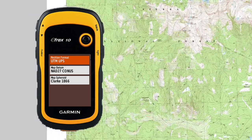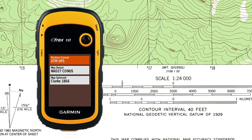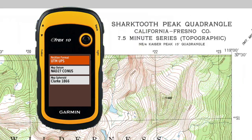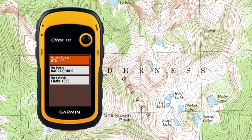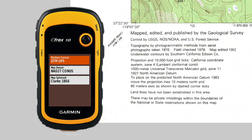The map I'm working with is the United States Geologic Survey 1:24,000 scale topographic map titled Shark Tooth Peak, California. If we look at the fine print at the lower left corner of the map, we can confirm that the map has a 1000 meter UTM grid for zone 11 printed on it and that the map is based on the 1927 North American datum, or NAD 27 CONUS on the GPS setup menu.